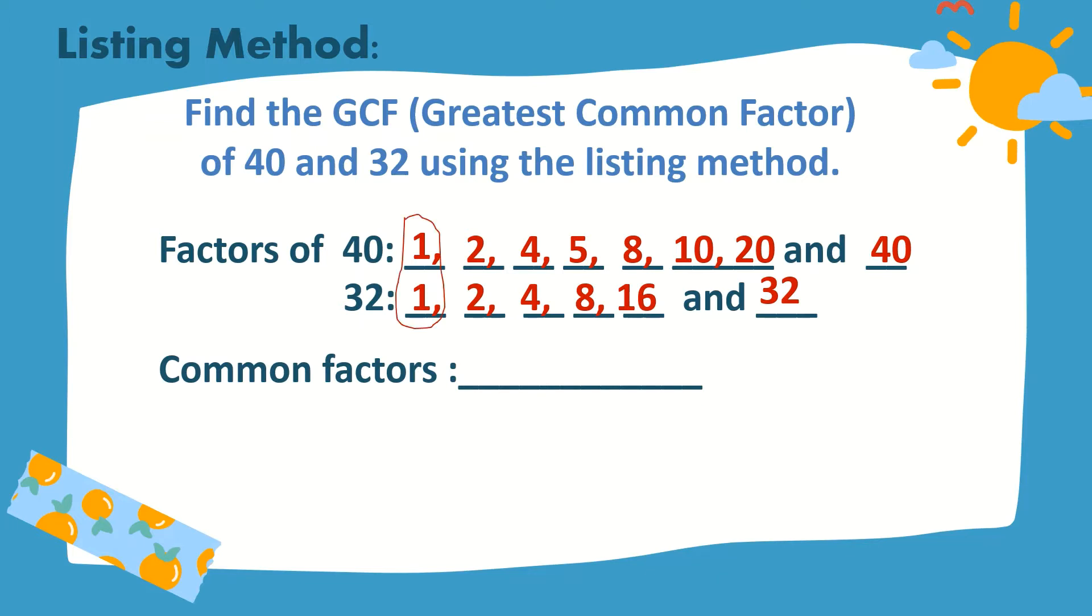The common factors are 1, 2, 4, and 8. So, among the common factors, the greatest is 8.